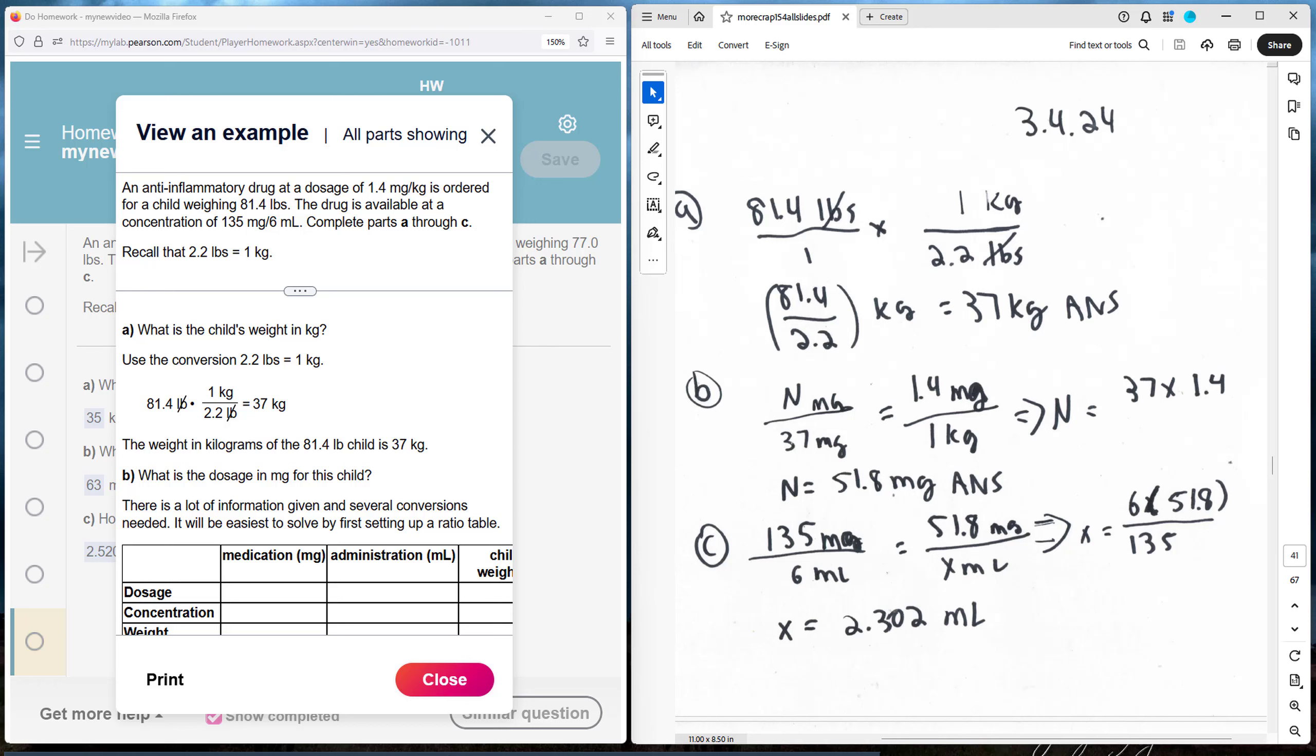Recall that 2.2 pounds is the same thing as 1 kg. So Part A asks us to find the weight in kilograms, so we have to convert pounds into kilograms.